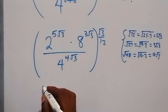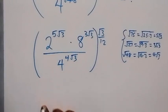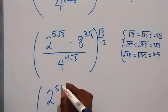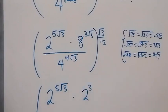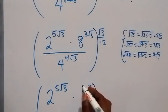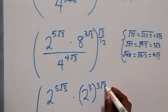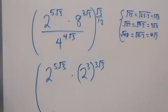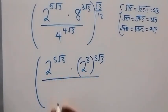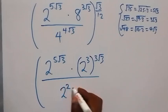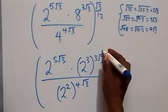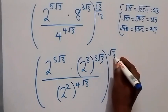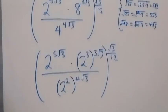In the next step, let's change the numbers to the same base. It's already base 2, so we have, in brackets: 2 raised to power 5 root 3, then times 2 raised to power 3 (since 2×2×2 = 8), raised to power 3 root 3, divided by 2 raised to power 2 (since 2²=4), raised to power 4 root 3, all raised to power root 3 over 12.